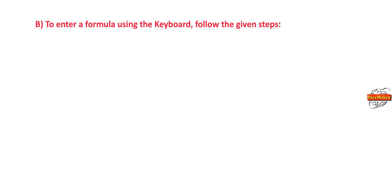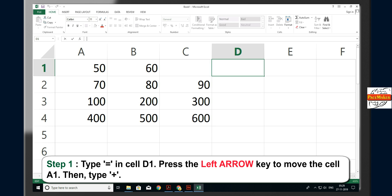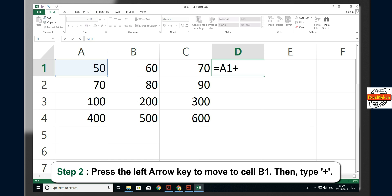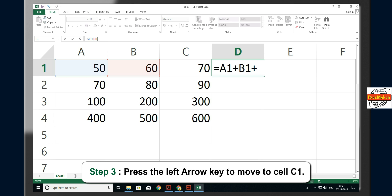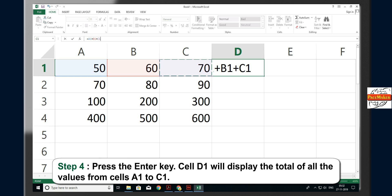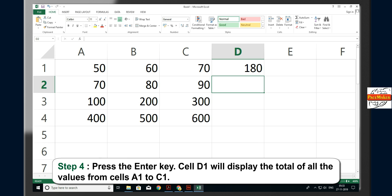To enter a formula using the keyboard, follow these steps. Step 1: Type = in cell D1, press the left arrow key to move to cell A1, then type plus. Step 2: Press the left arrow key to move to cell B1, then type plus. Step 3: Press the left arrow key to move to cell C1. Step 4: Press the Enter key. Cell D1 will display the total of all the values from cells A1 to C1.